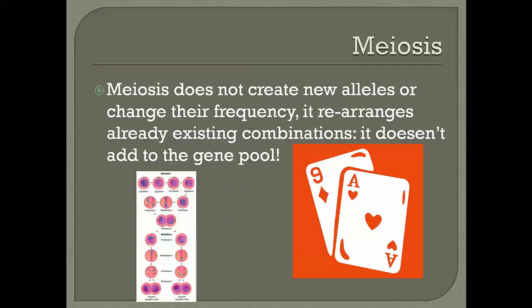Meiosis produces gametes in animals or spores in plants, and it mixes things up to help maintain diversity — but it does not change allele frequencies. Think of a deck of cards: if your deck has two aces and you shuffle it, you still have two aces at the end. Meiosis doesn't add or subtract genes from the gene pool — all genes in a population — even if meiosis makes new combinations.